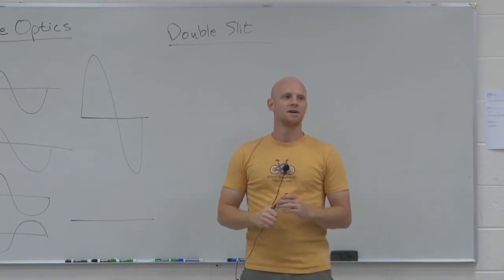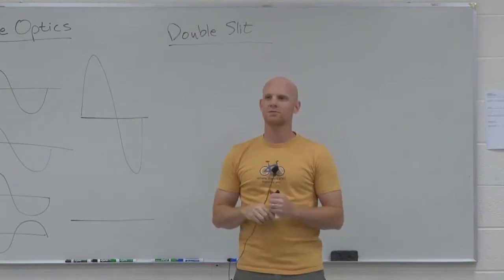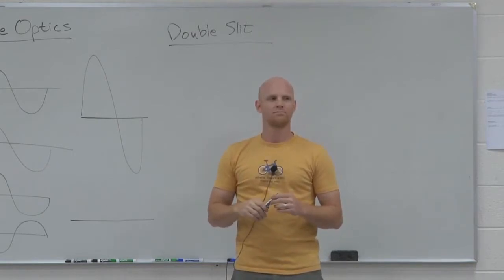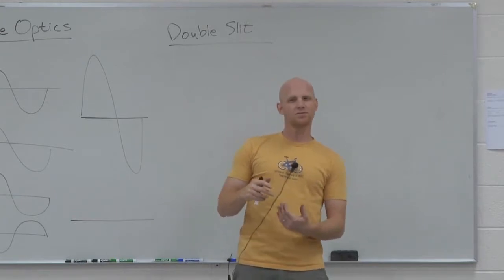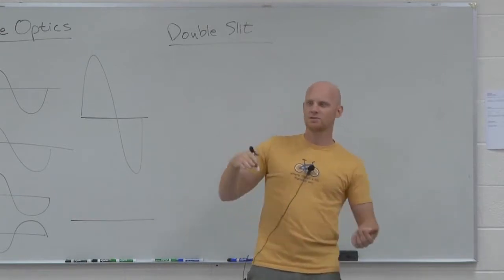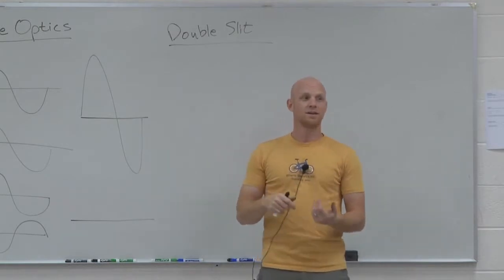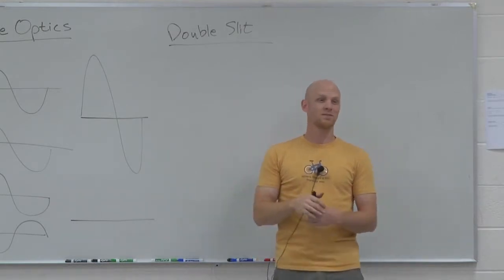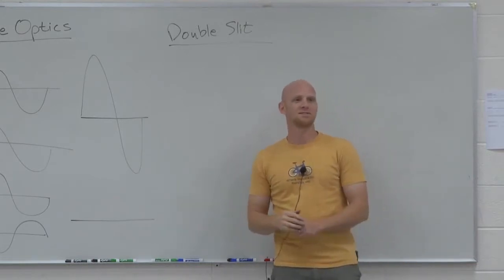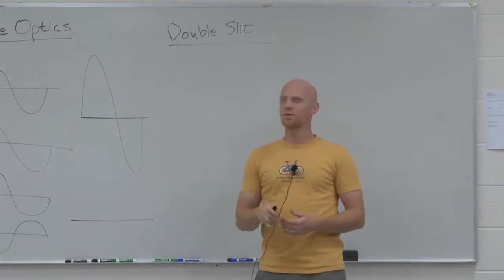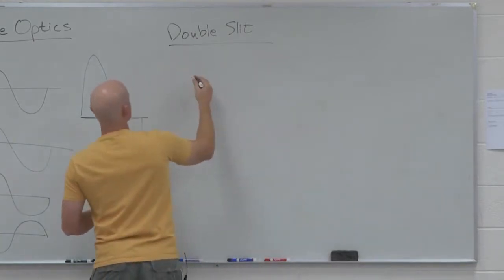The problem is, it still happens if you shoot one electron through at a time. They don't really know what that means exactly. Is the electron interfering with itself? Usually you need two light waves to interfere, either constructively or destructively, but here you see an interference pattern with only one electron at a time. So what's it interfering with? They still debate what it really means. But with light, it's a little more straightforward.